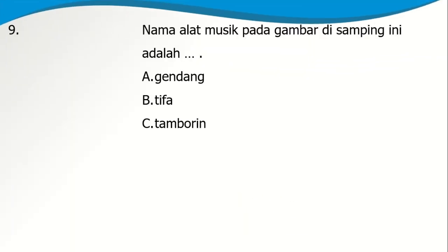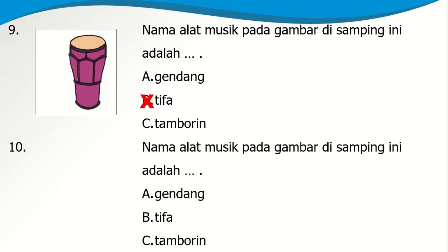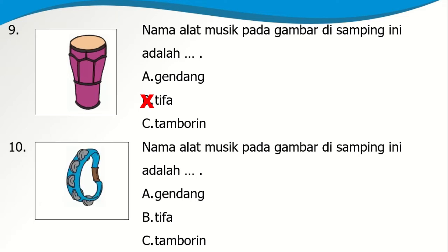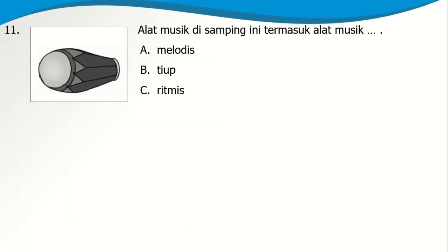Soal nomor 9: Nama alat musik pada gambar di samping adalah A. Gendang, B. Tifa, atau C. Tamborin. Ya, ini adalah tifa. Nomor 10: Nama alat musik pada gambar di samping adalah A. Gendang, B. Tifa, atau C. Tamborin. Ya, ini namanya adalah tamborin. Soal nomor 11: Alat musik di samping termasuk alat musik A. Melodis, B. Tiup, atau C. Ritmis. Ini adalah gendang, dan gendang termasuk alat musik ritmis.